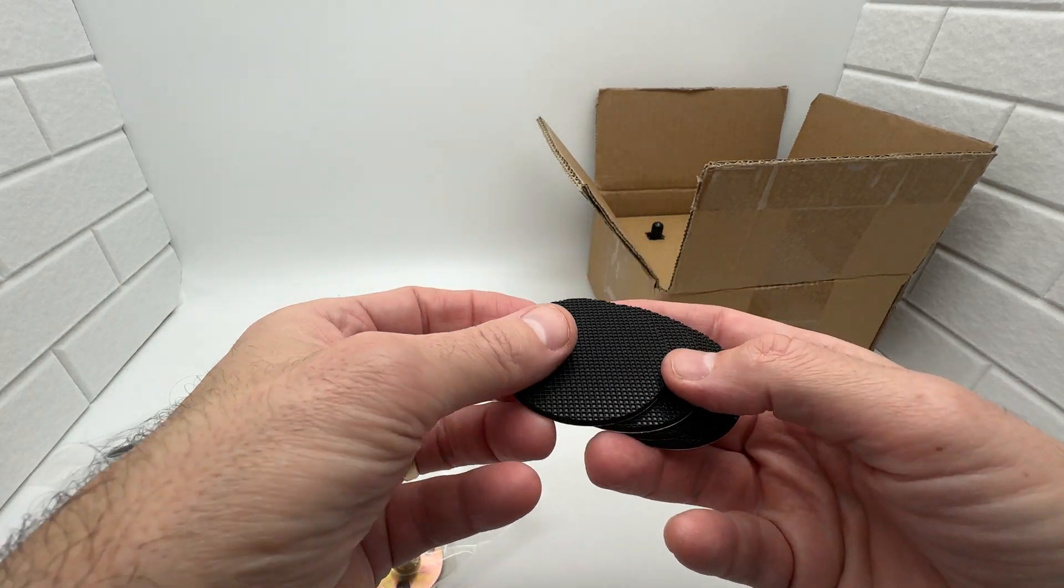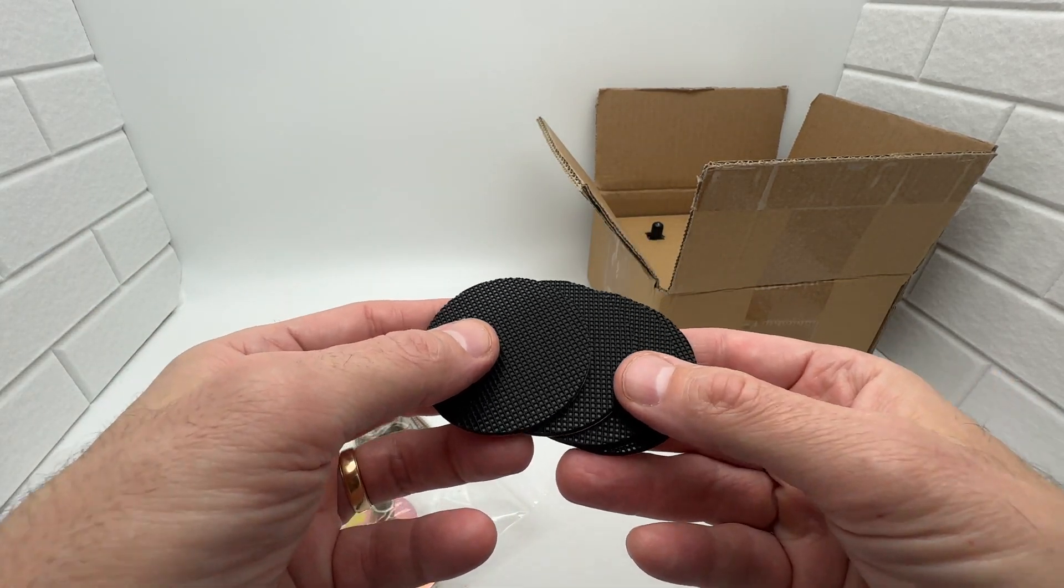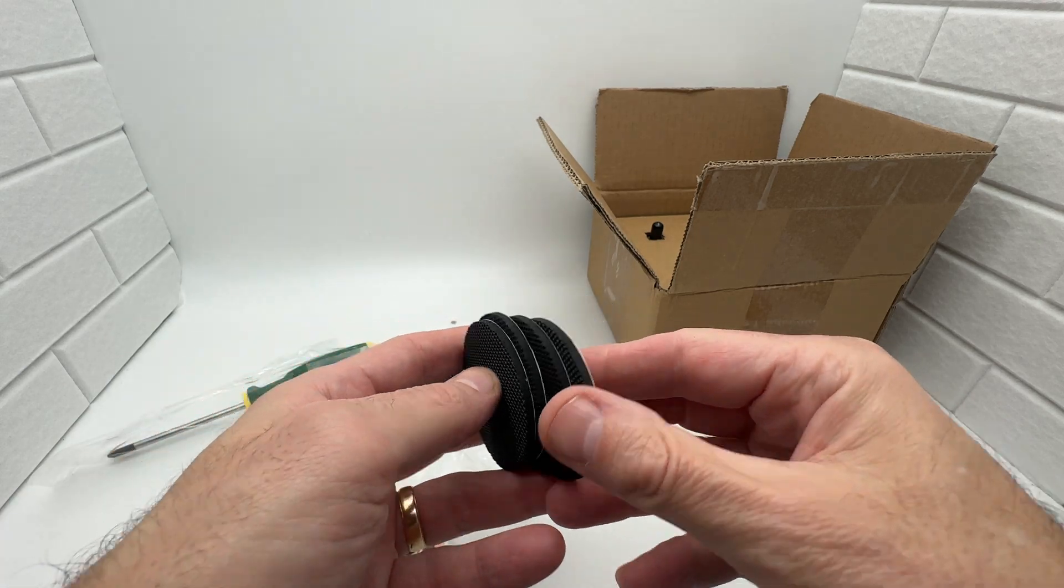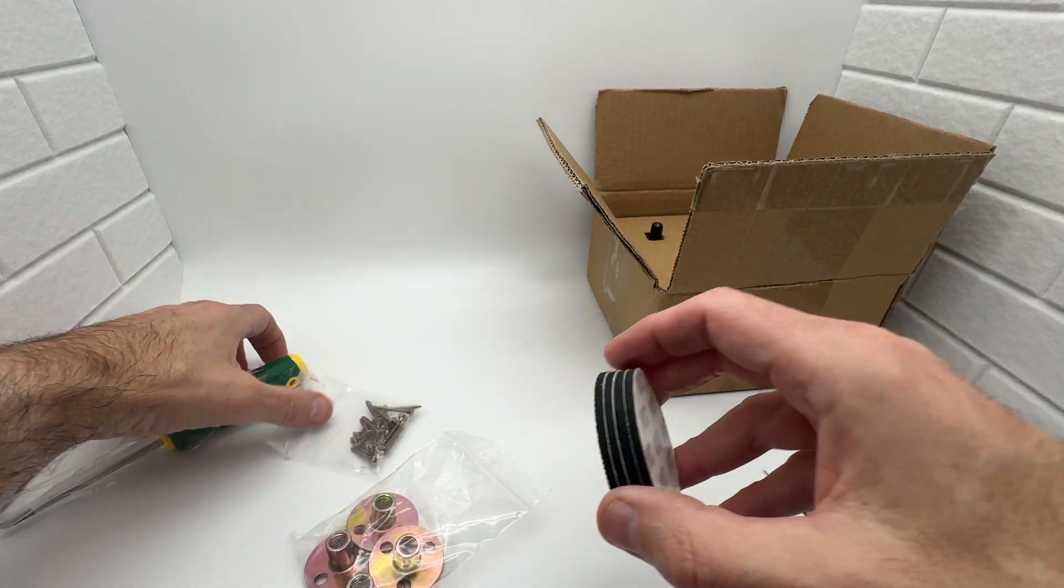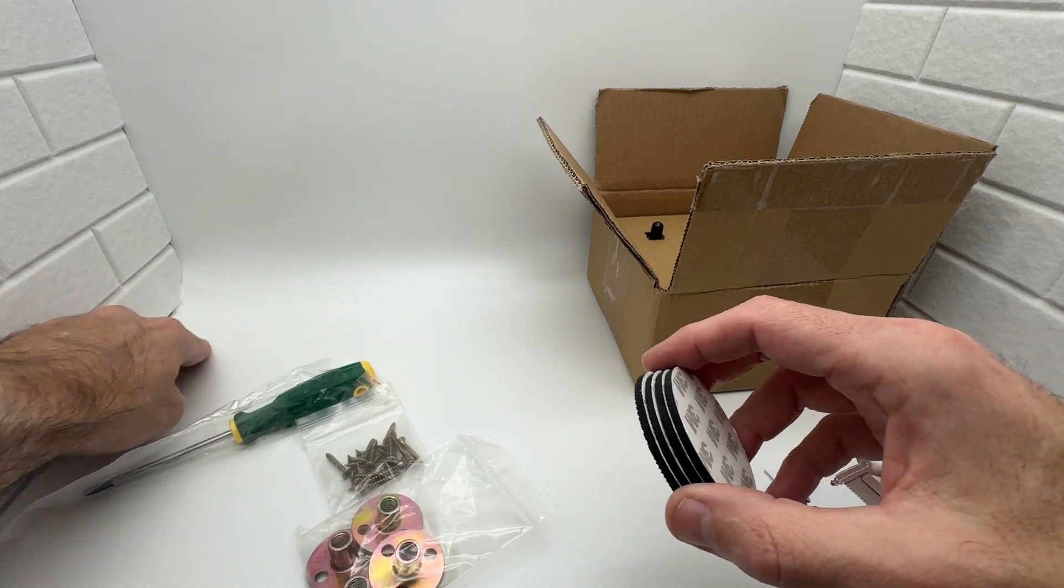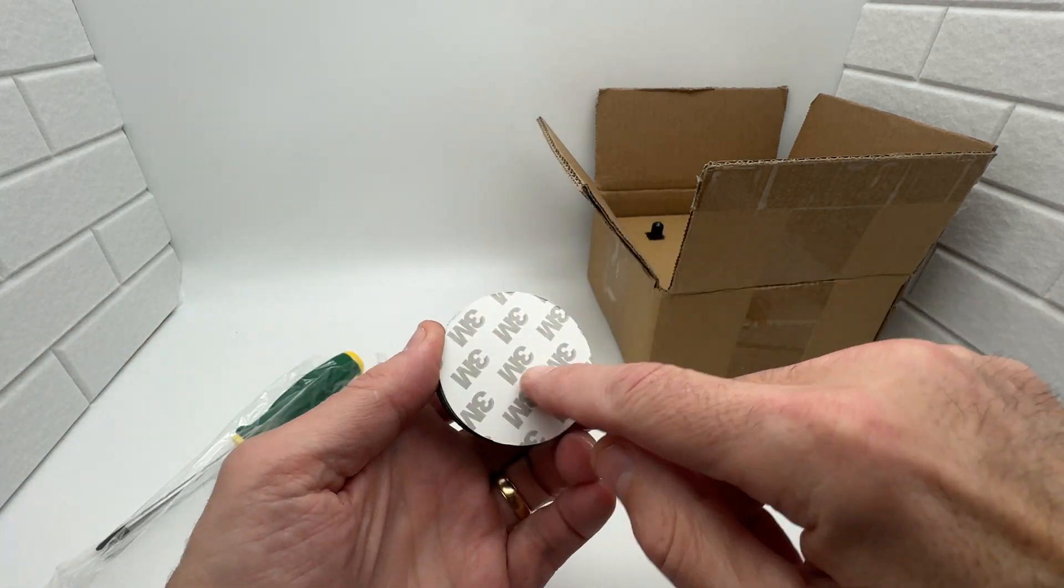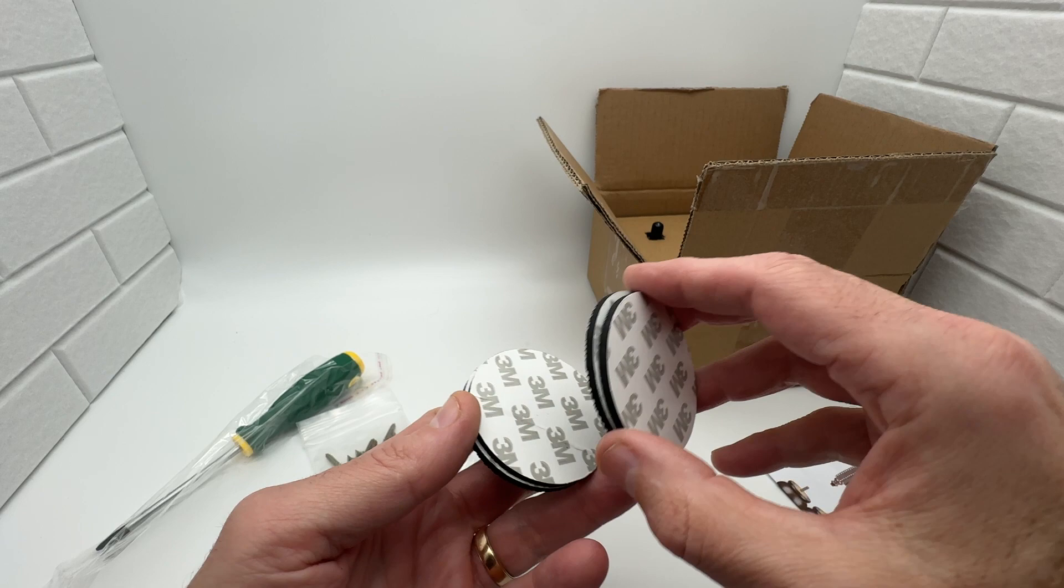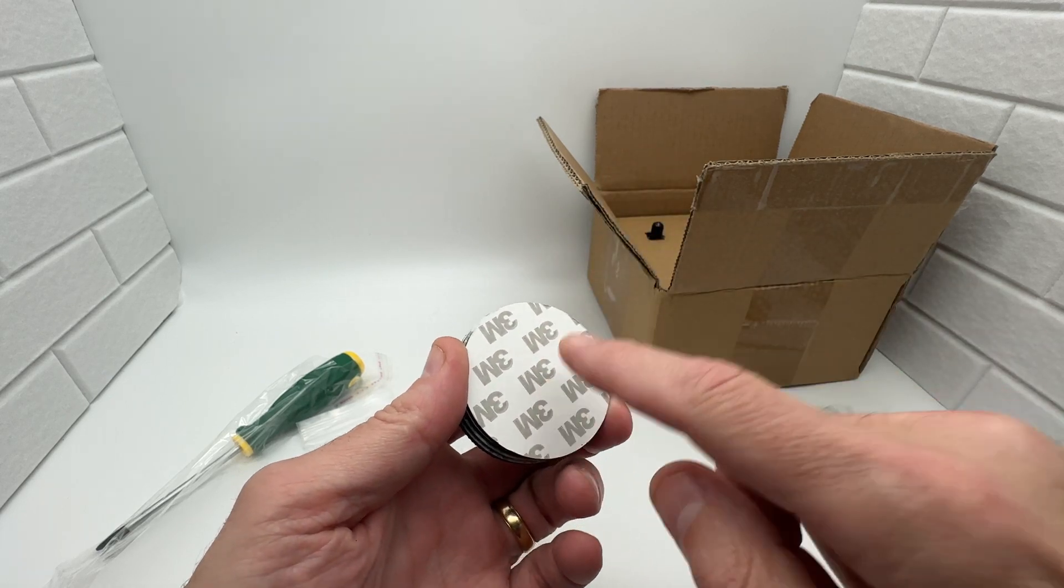It comes with four non-slip discs that you put on the bottom of the wood feet if you want to. I'm having it on carpet, so I don't need that. But they do have the 3M self-adhesive on the back, so everything's top quality. If you have hardwood floors, you should use that so you won't scratch it.